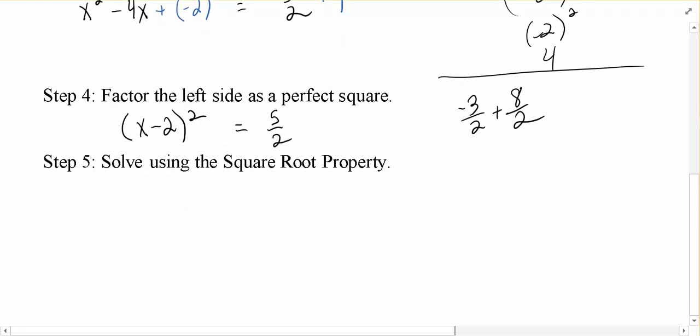So now using the square root property, we get x - 2 = ±√(5/2). We can add the 2 to the other side to get 2 ± √(5/2).